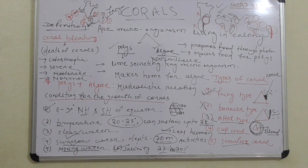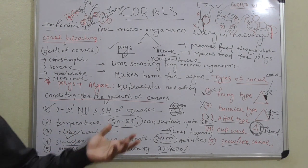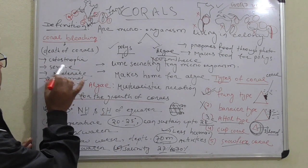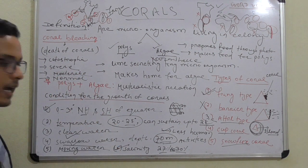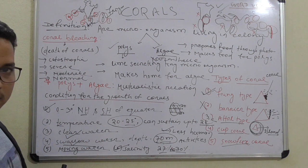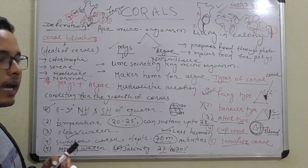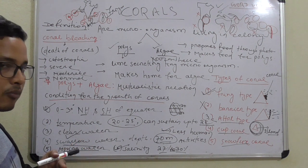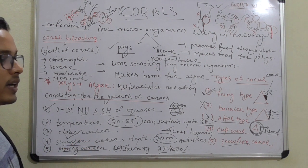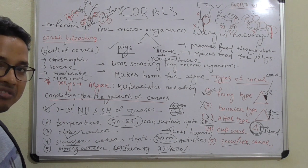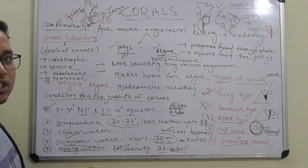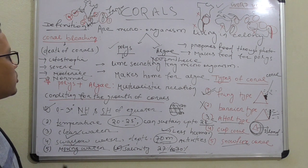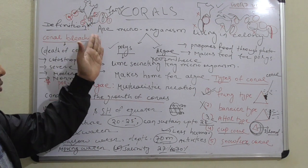Coral bleaching means the death of corals. Corals die when their growth conditions are disturbed. Causes include temperature increase, salinity increase, water turbidity increase, and frequent cyclones. El Niño is a factor for coral death because it increases water temperature, which leads to coral bleaching. La Niña is NOT a factor for the death of corals.